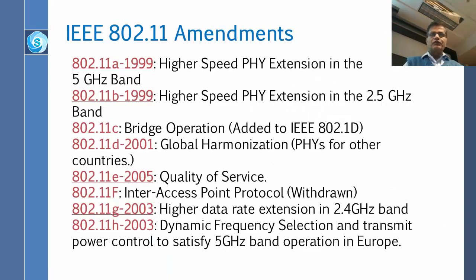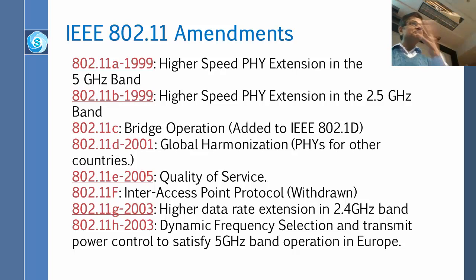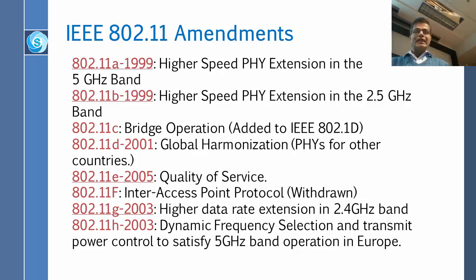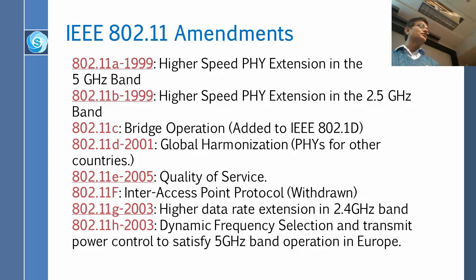So first of all, amendments. 802.11 was done in 1997. So in 18 years we have hundreds of amendments — lots of amendments. Amendment A was done in 1999, and all it did was change the band to 5 gigahertz and used OFDM.